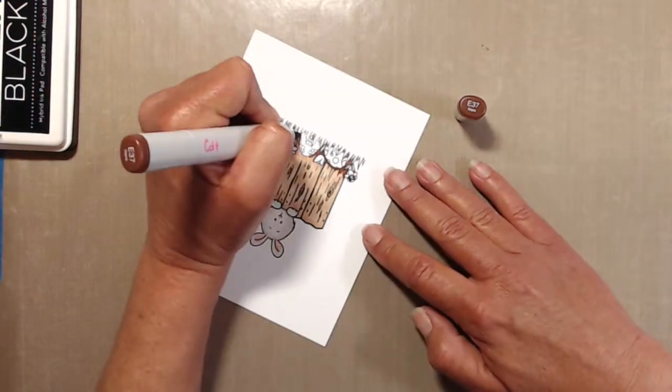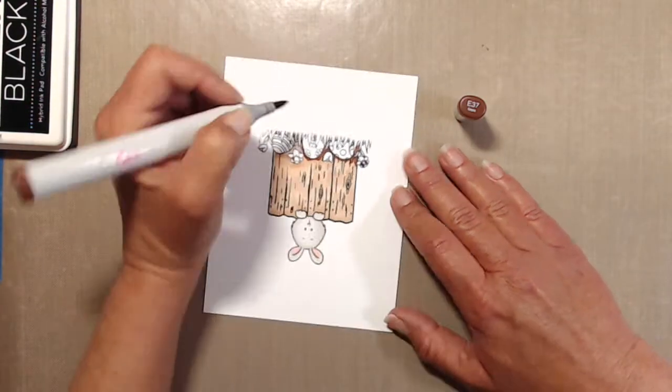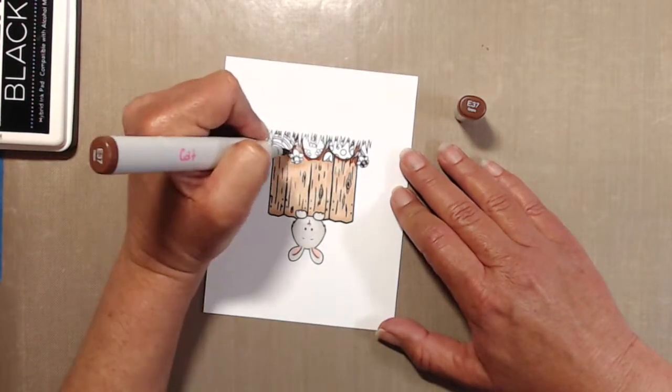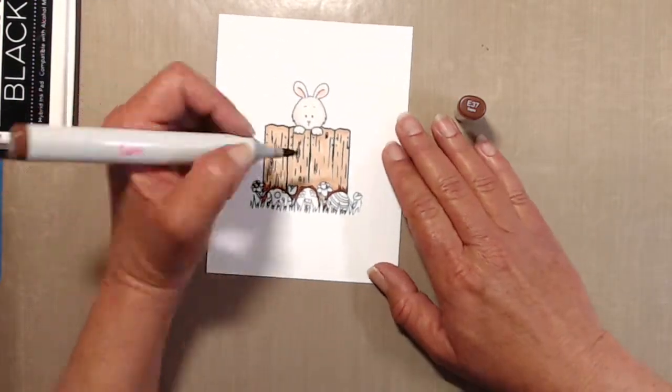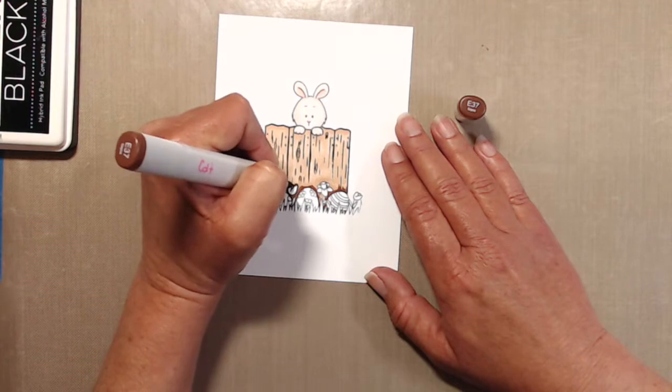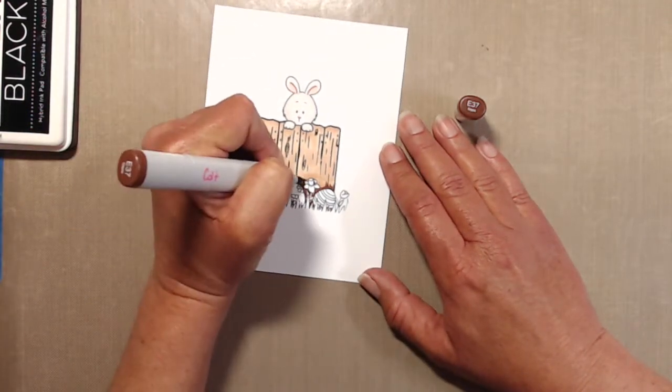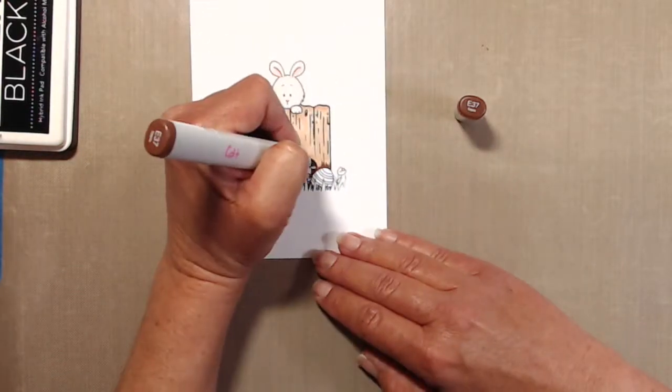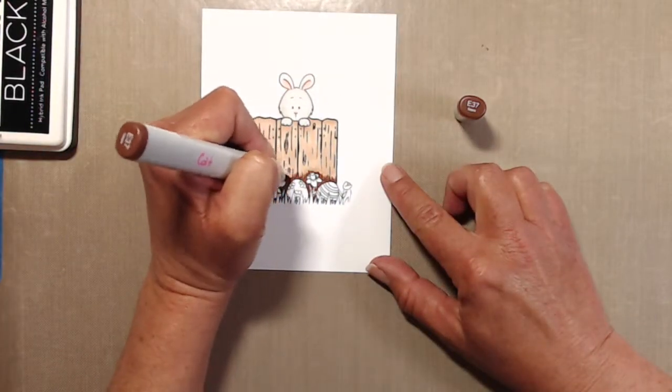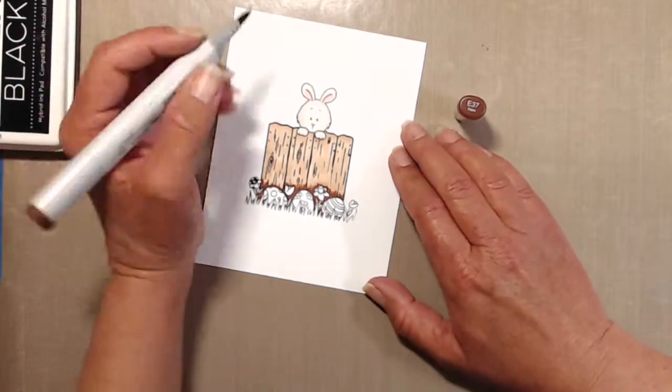I encourage you, whether you're left-handed or right-handed, turn the paper as you need to and try coloring either pulling towards you or flicking away from you and see what is most comfortable for you. A lot of times, like working around those little daffodils, I'm not really even flicking, I'm just kind of touching the tip of the marker to the cardstock.